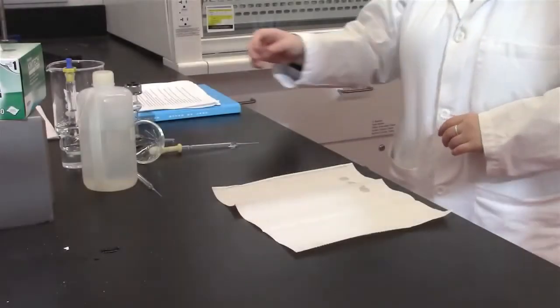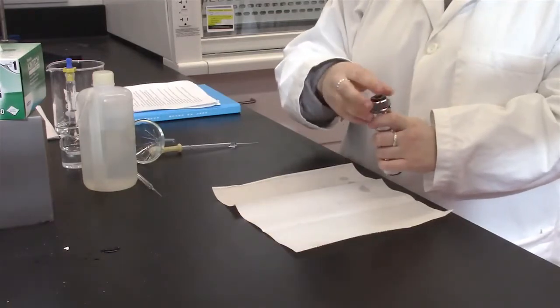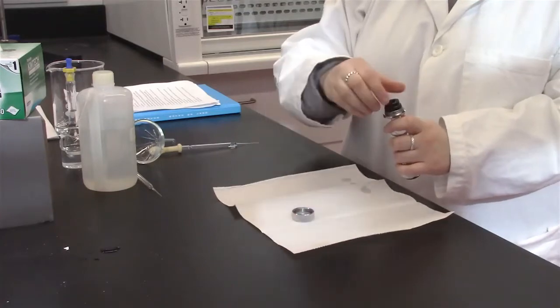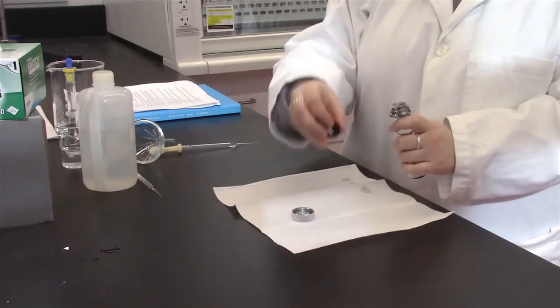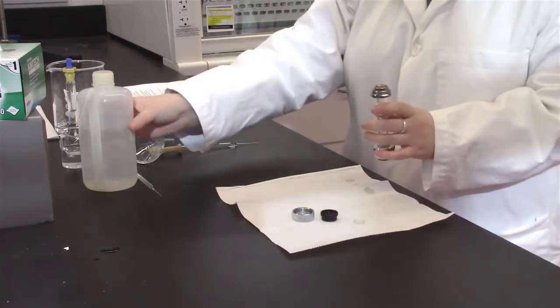Next, ensure that the polarimeter sample holder is clean. Note that there are three sections to the polarimeter sample holder: the silver cap, the black washer, and a clear lens. Be careful not to break the lens.